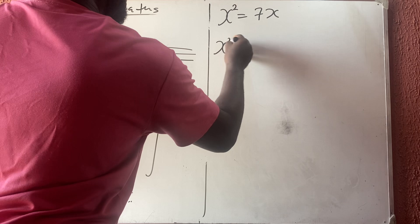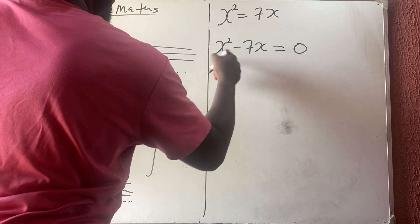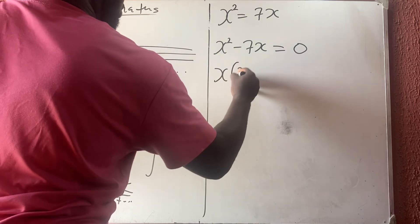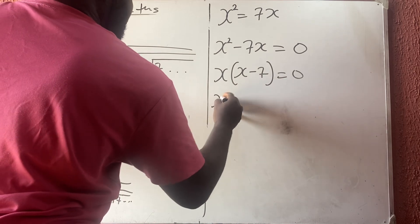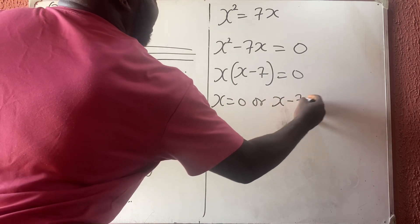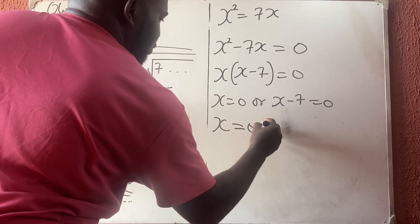So what do we have? Factorizing, I'm going to have x(x - 7) = 0. So what do we have? x = 0 or x - 7 = 0, which gives x = 0 or x = 7.